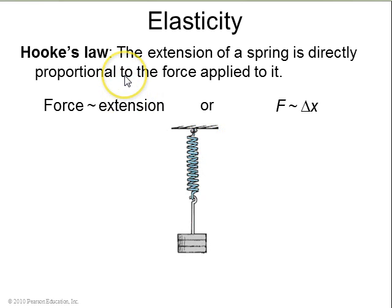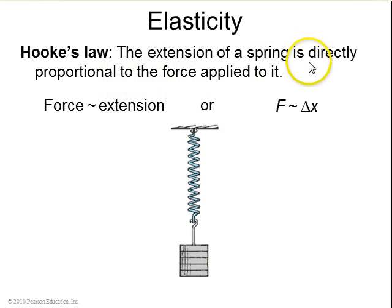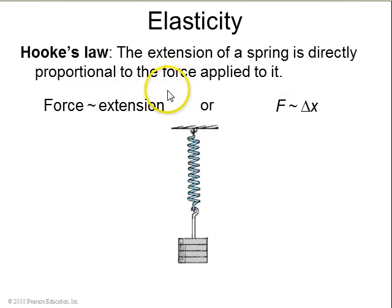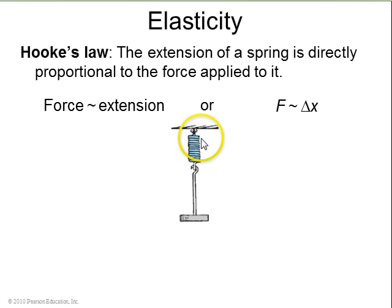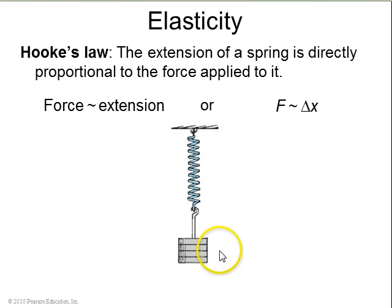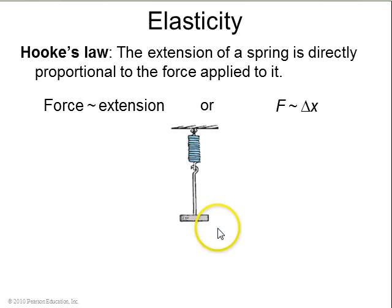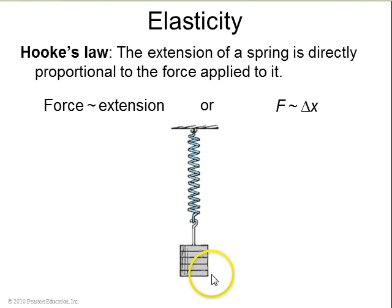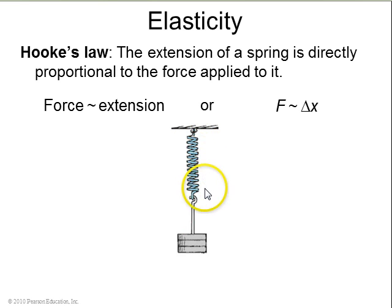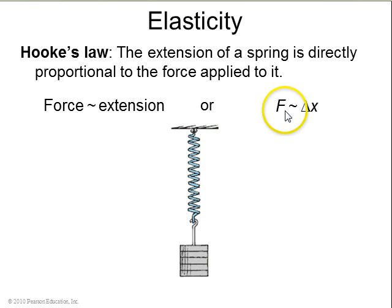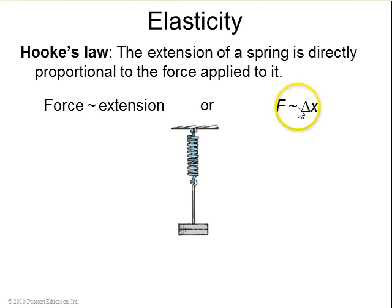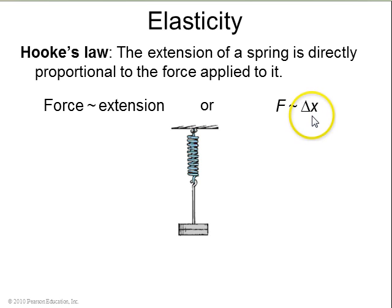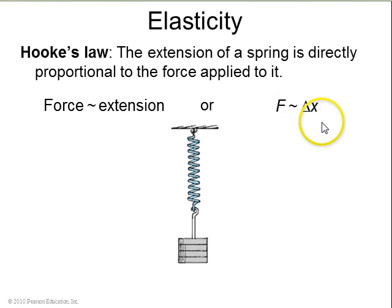Hooke's law describes the fact that more force will produce more extension of an object. For example, a spring obeys Hooke's law. In this animation, it shows a greater and greater force being applied to the spring by hanging one, two, three, four, and five masses. As you increase the force, you increase the extension — force is proportional to extension, so twice the force means twice the extension.